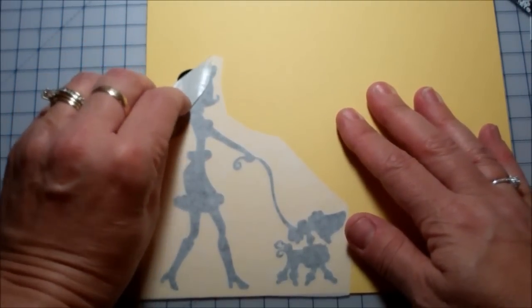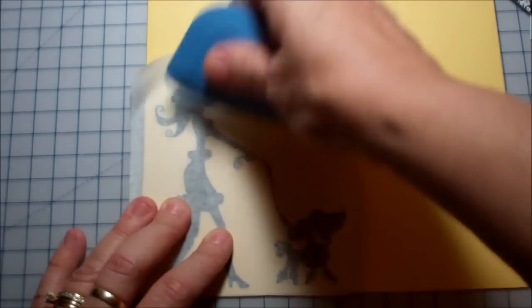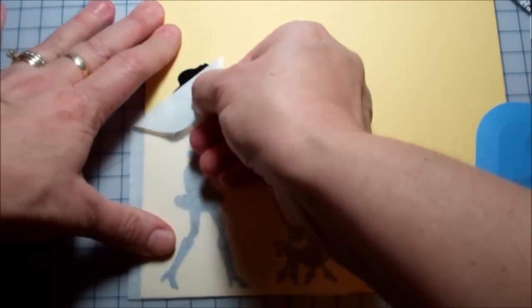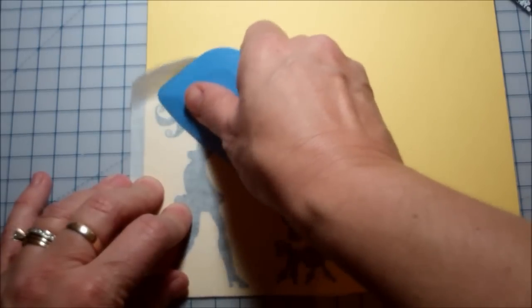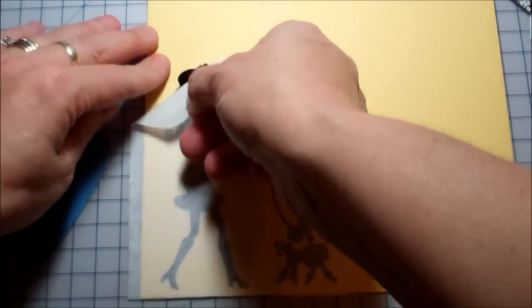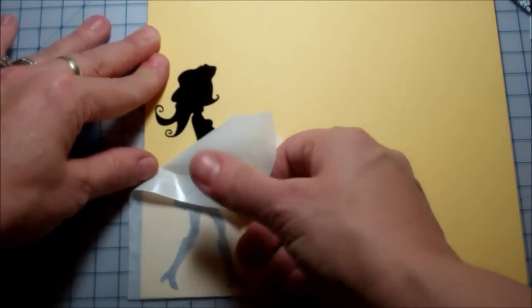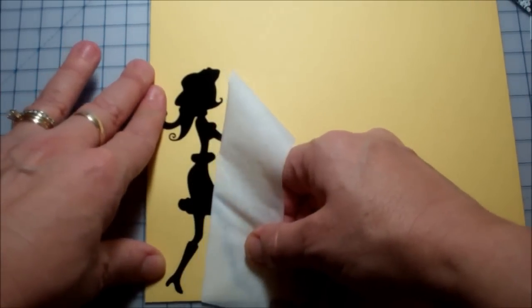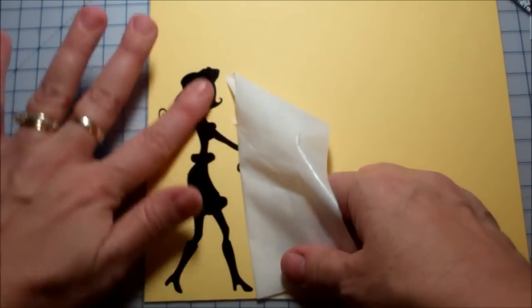And then you can kind of test it and make sure. Now I'm using a textured cardstock, so I really want to make sure that I do it. And then kind of go ahead... oops, see I didn't get her hair. There you go, look at how cute that is. I just think it's the coolest thing when you're peeling it out. Look at that.